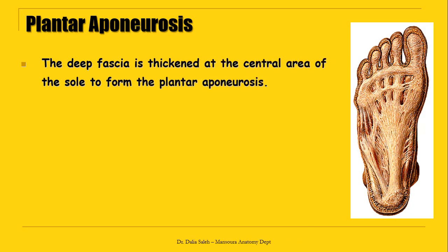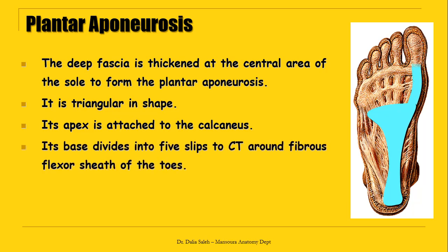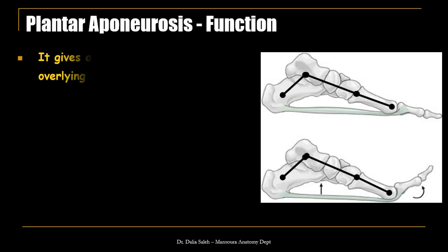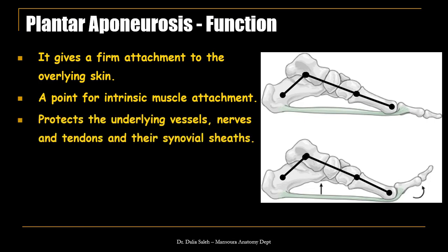The deep fascia of the sole of the foot is thickened at the center to form the plantar aponeurosis. It is triangular in shape — its apex is attached to the calcaneus, while its base splits into five slips to the connective tissue around the fibrous flexor sheaths of the toes. These slips are connected by ligaments, thus limiting the movement of the toes. The plantar aponeurosis gives firm attachment to the overlying skin, providing stability of the foot on the ground during walking. It also serves as a point of attachment for the intrinsic muscles of the foot.